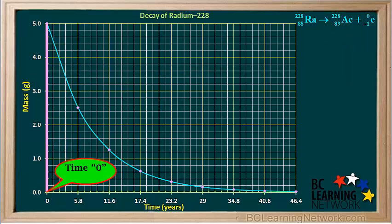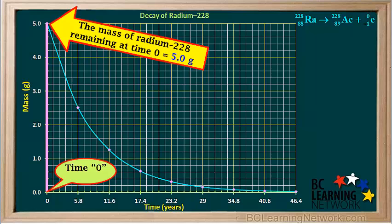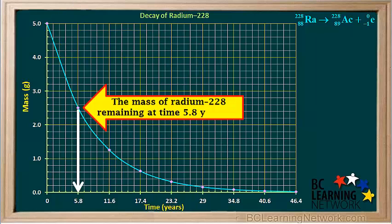When we first start measuring the mass of the radium-228 in the sample, this is what we call time zero. There are 5 grams of radium-228 present at time zero. If we wait 5.8 years and measure the mass of radium-228 again, we find that it's 2.5 grams.